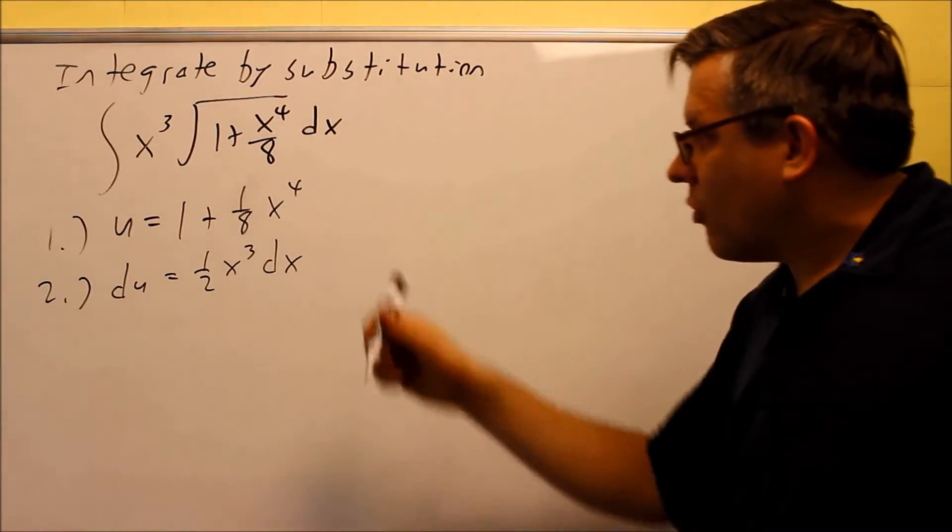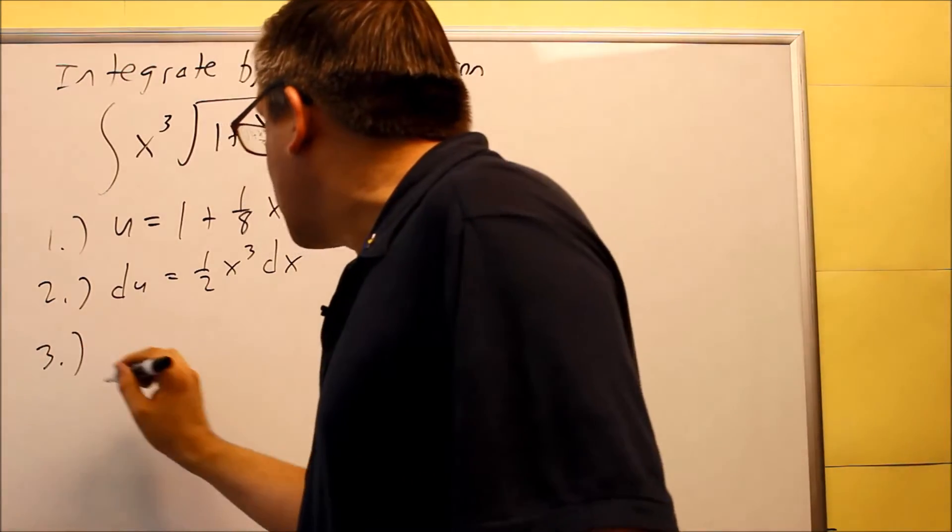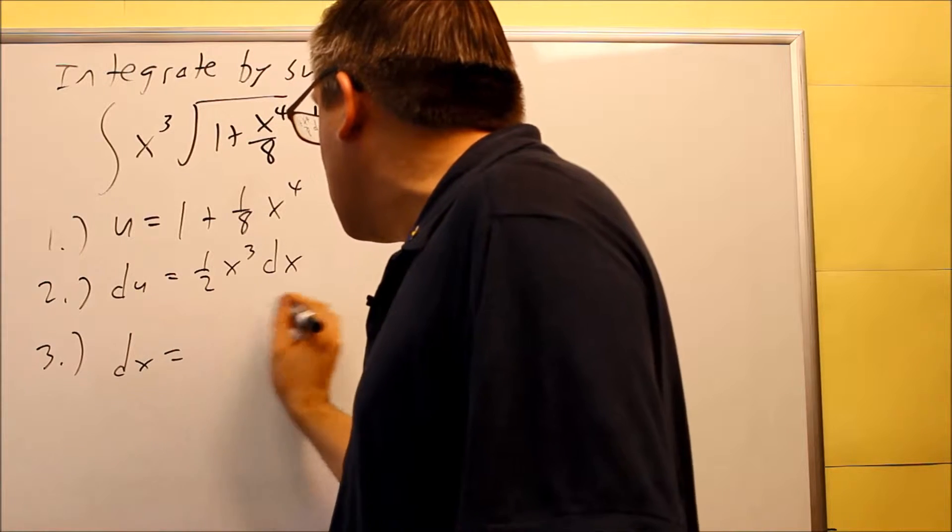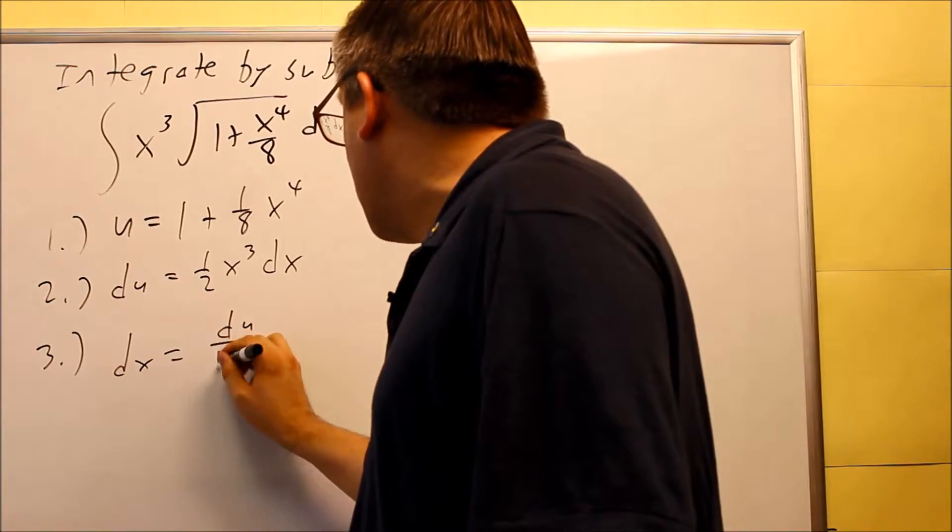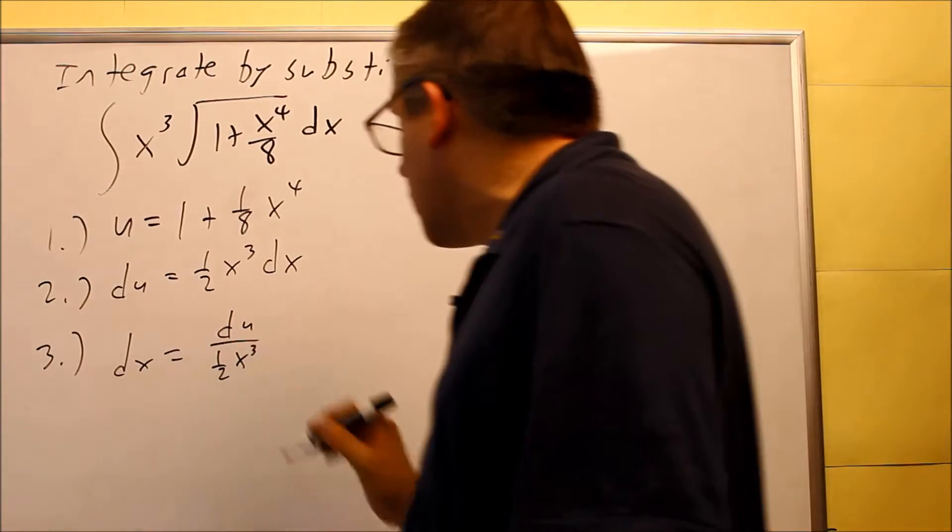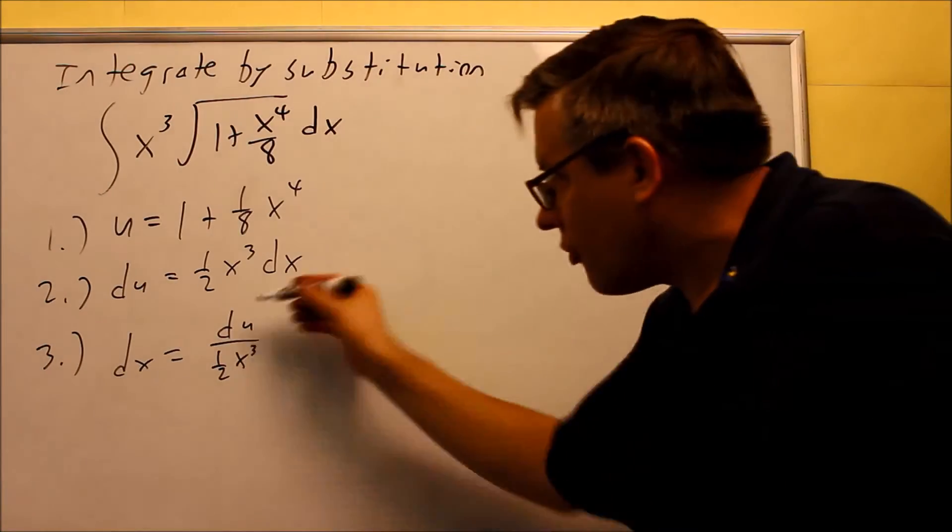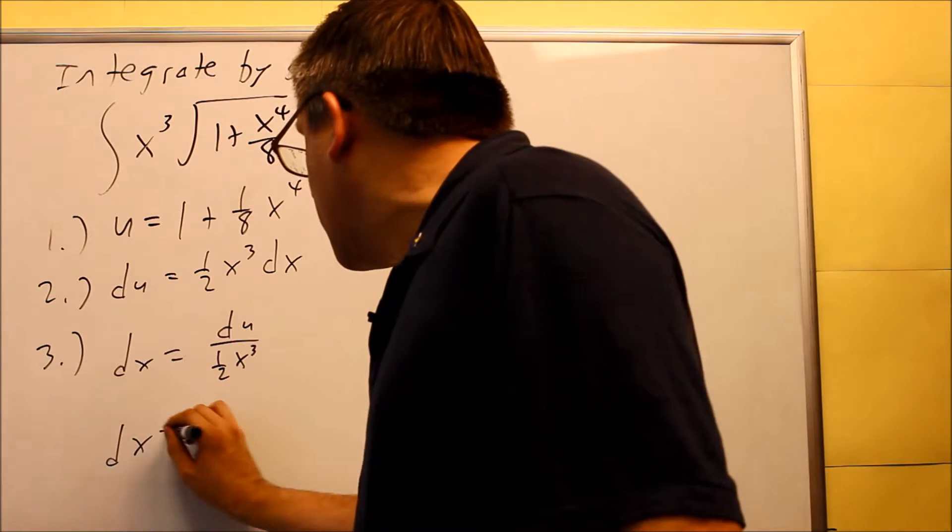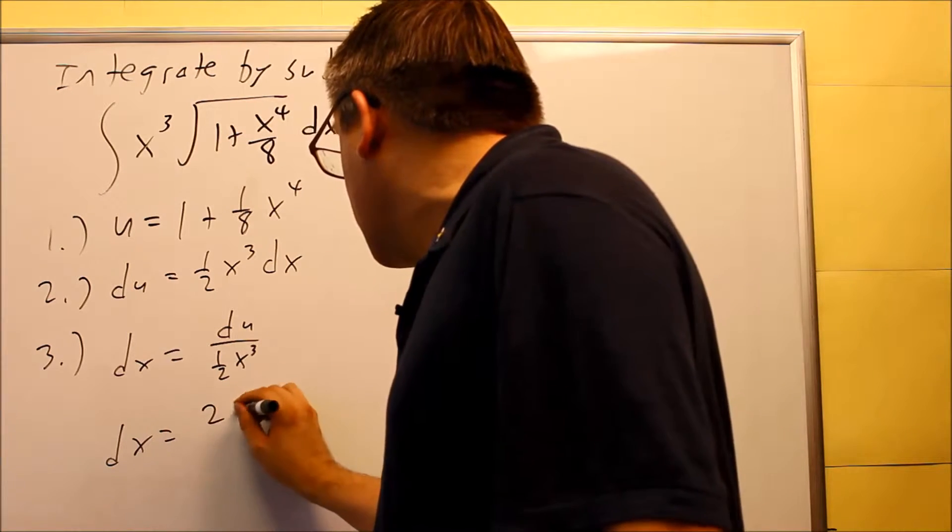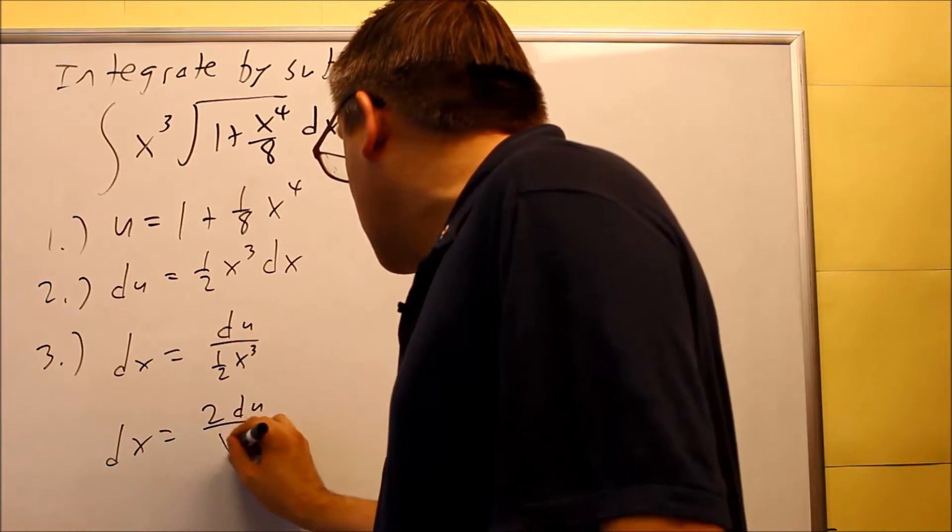We want to solve this for dx, that's what we're going to do for step number 3. So dx is going to be du divided by one half x to the third, but if you don't want to divide by a fraction, it's probably better to flip that fraction,